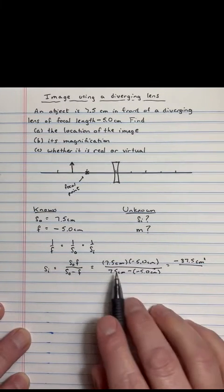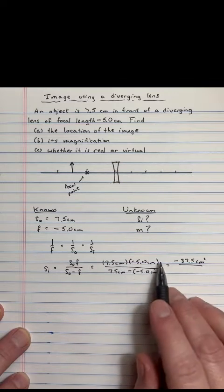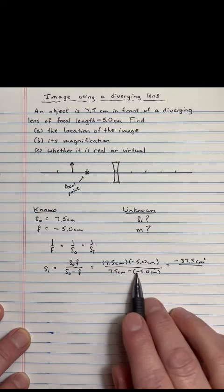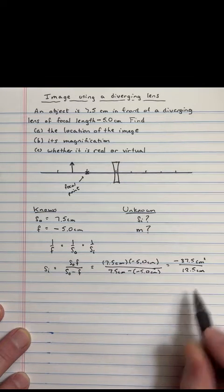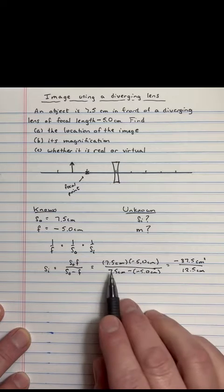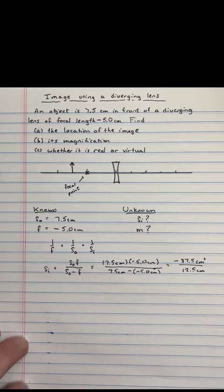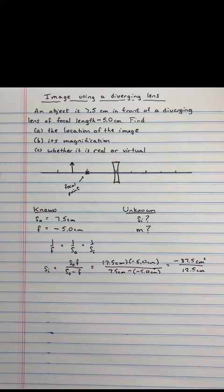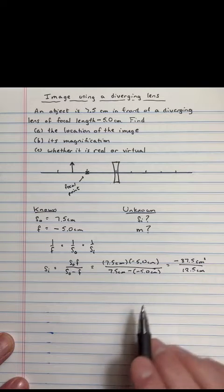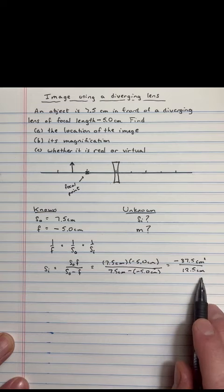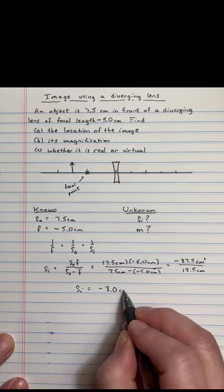In the denominator, in the bottom, it's 7.5 minus a negative 5. And when you subtract a negative, it's the same as adding. So 7.5 plus 5, which is 12.5, like that. And this number is positive. So what pops out of it? 37.5 divided by 12.5 is 3. There's a negative sign. And one of these centimeters cancels out that centimeter. So SI is a negative 3 centimeters.